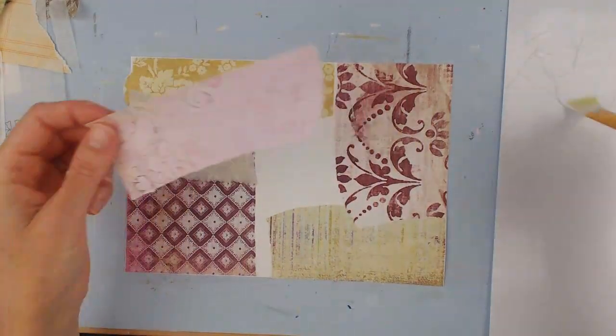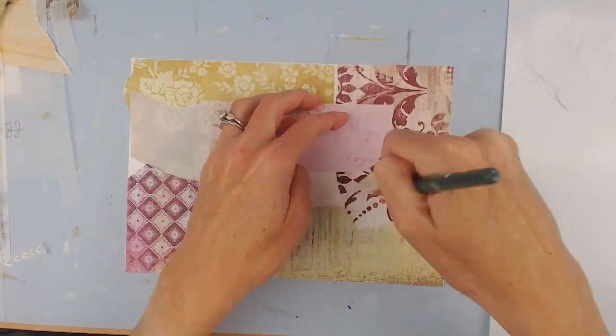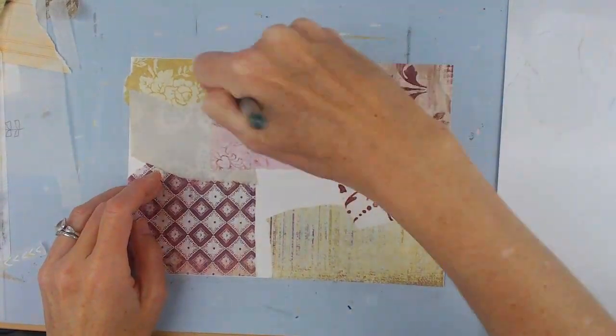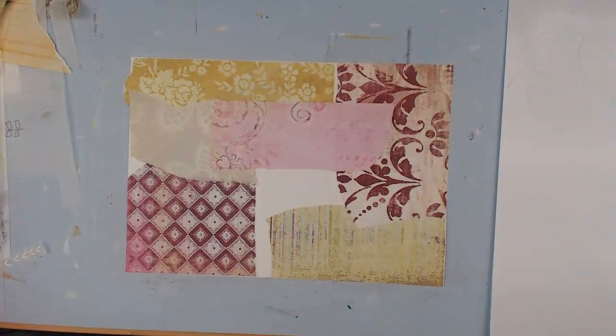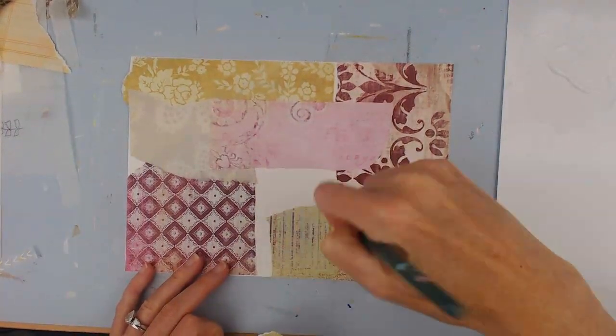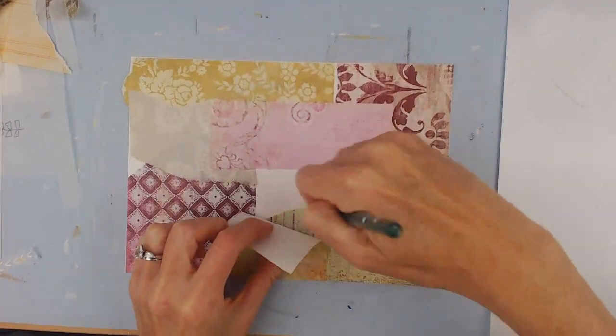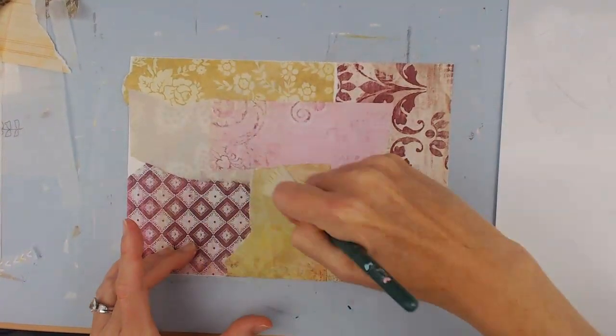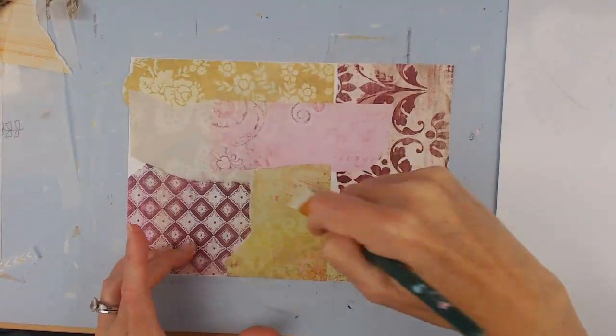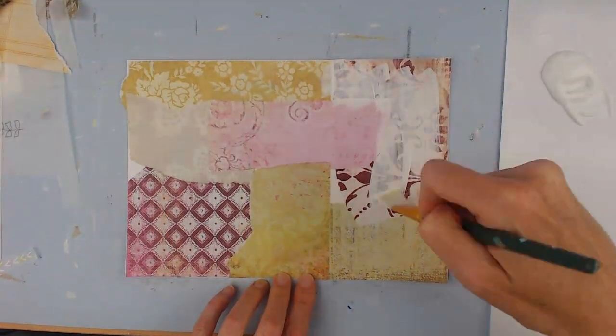So I am putting all these papers down with a fluid satin medium Liquitex, and I am putting it on a piece of heavy 140 pound mixed media paper. I'm not really thinking too much about it—it's like a jigsaw puzzle, just putting it all down overlapping and just getting my creative glow started.